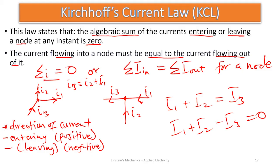This is Kirchhoff's Current Law — very easy. When you take a particular node, make sure that currents entering should be equal to those leaving, or the summation of all currents — with positive and negative signs taken into consideration — is equal to zero. Let's look at an example.